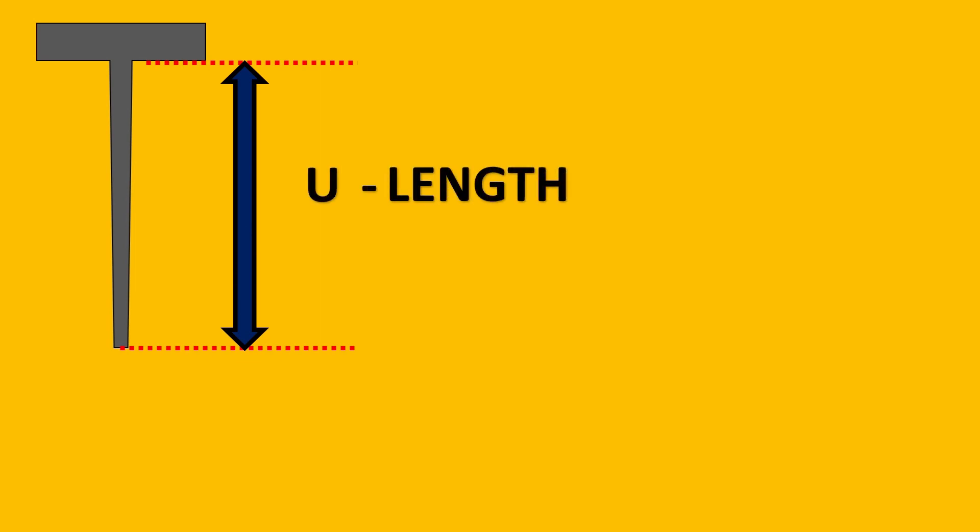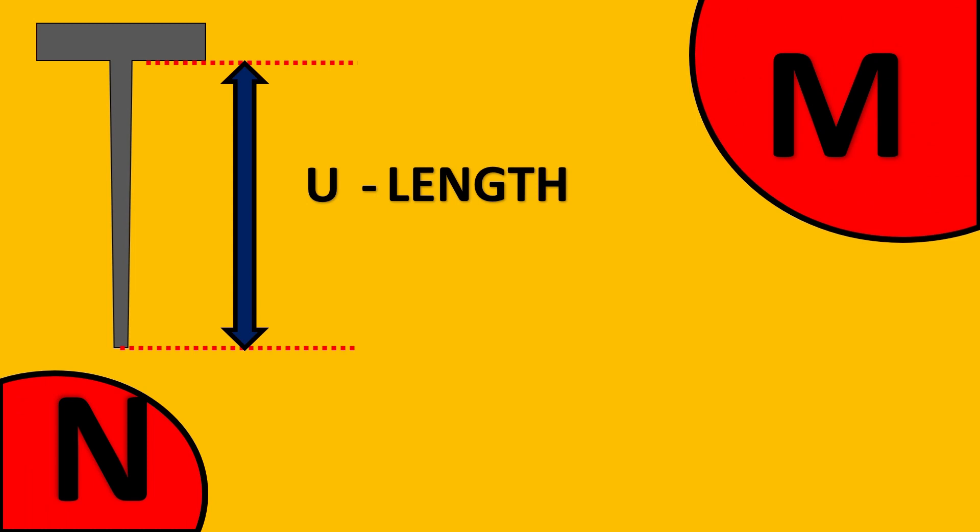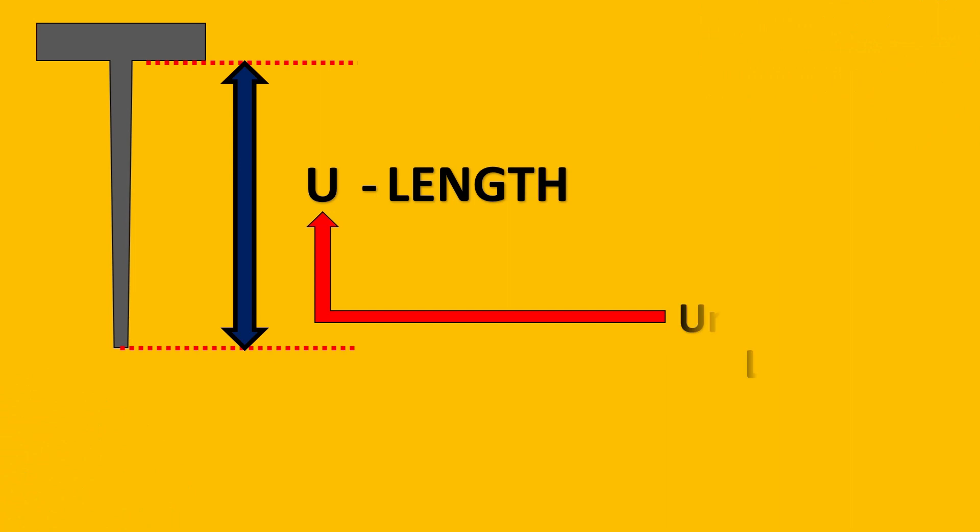This length is basically called as U-length. But did you ever thought why is it not called M-length or N-length? Why is there a specific reason we call it U-length? The answer is yes, the U stands for unsupported length of the thermowell.